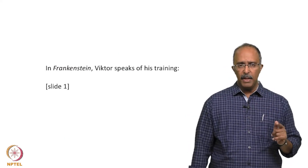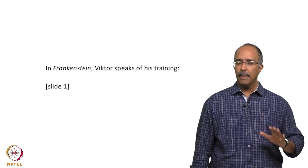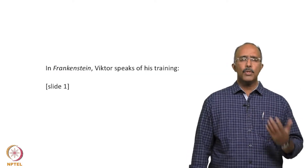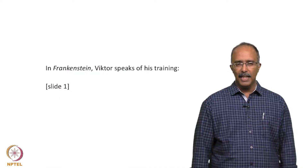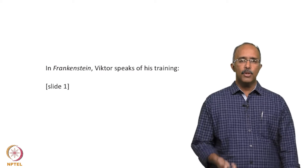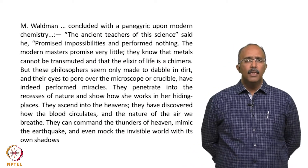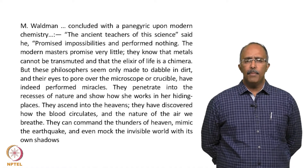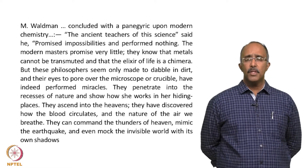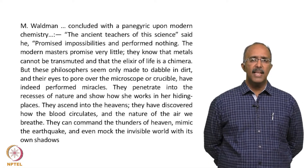Victor Frankenstein is the scientist — Frankenstein is the name of the scientist, not the monster. The monster in the text is unnamed, but for some reason we have historically always associated Frankenstein with the monster, not the scientist himself. Here is Victor speaking about his training in the sciences. Monsieur Waldman — this is Victor's encounter with various scientists and tutors in universities across Europe. Frankenstein is trying to find the secret of life, and this is what Waldman says.